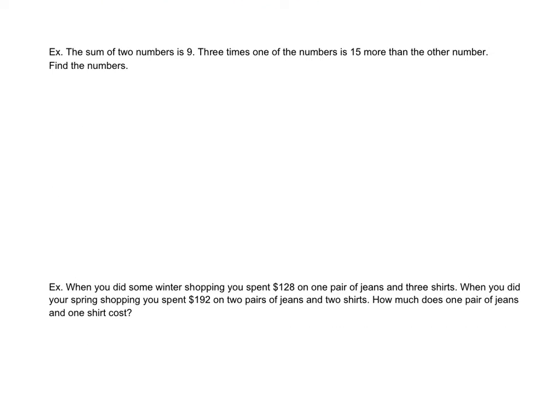The first one is about numbers. The sum of two numbers is nine. Three times one of the numbers is 15 more than the other number. Find the numbers. My suggestion is always go to the last question — it says find the numbers, so those are your let statements. Let X represent the first number, and let Y represent the second number.